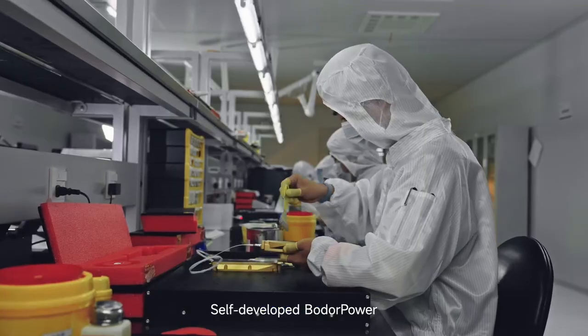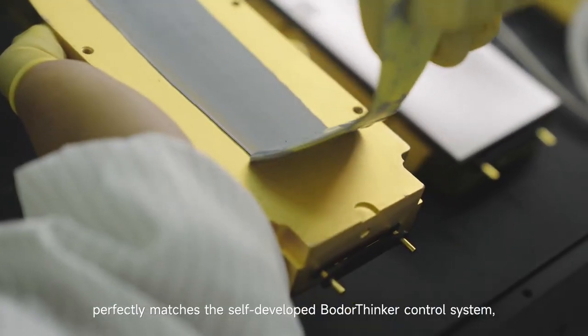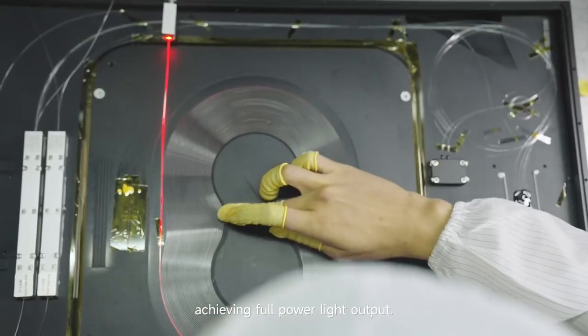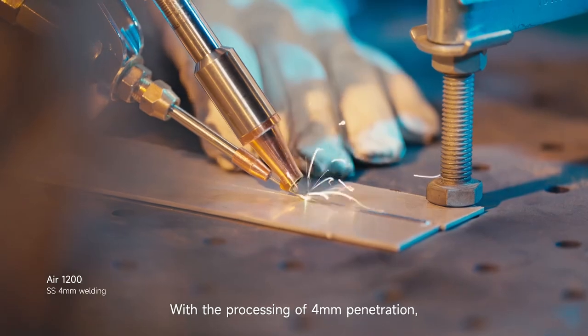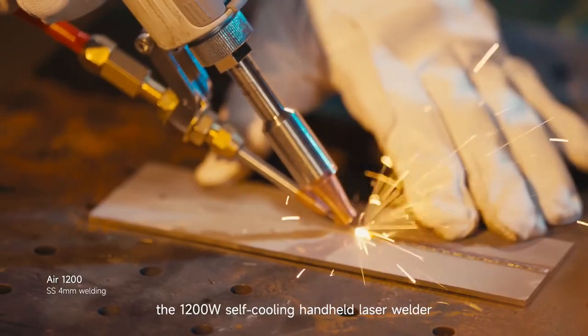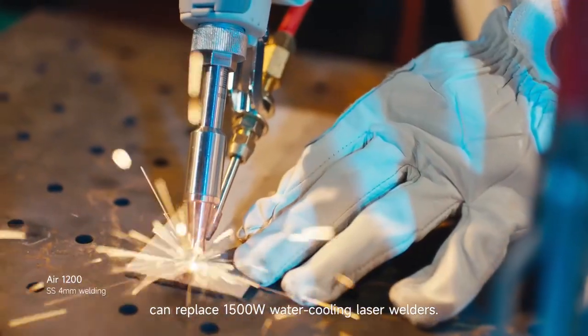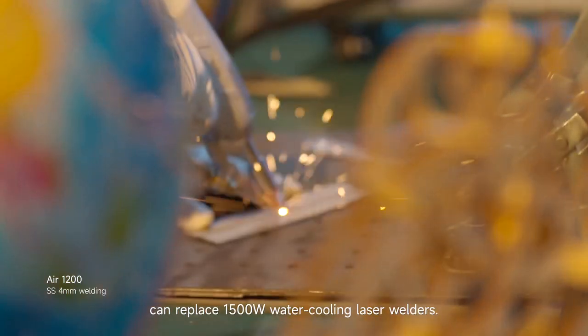Self-developed Voter Power perfectly matches the self-developed Voter Thinker Control System, achieving full power light output. With the processing of per millimeters penetration, the 1200W self-cooling handheld laser welder can replace 1500W water-cooling laser welders.